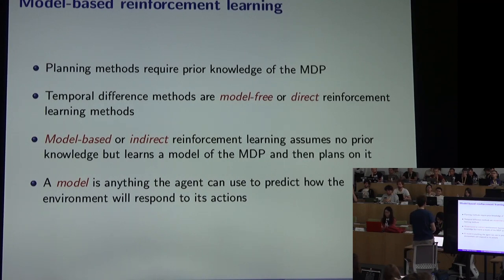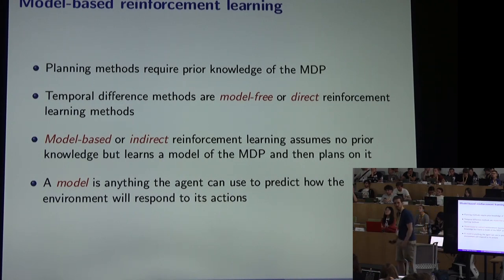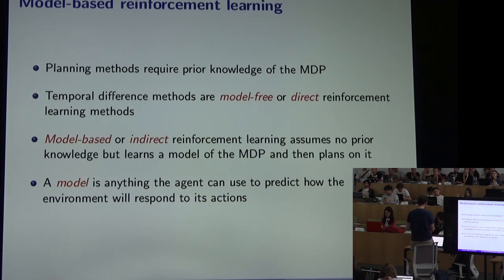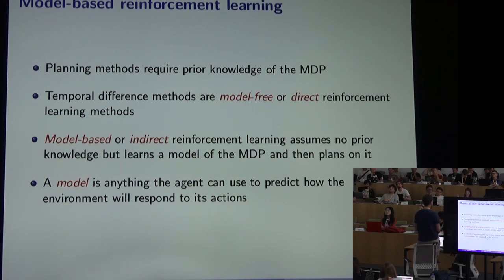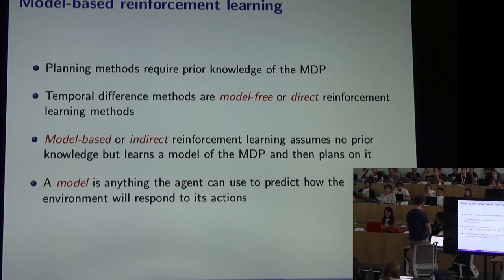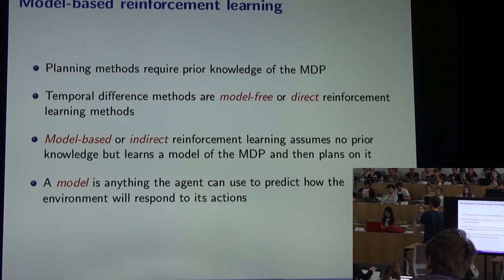That concludes the policy gradient portion of this lecture. Switching gears to model-based reinforcement learning — a concept I've hinted at several times. The idea is simple: take the data from interacting with the world and instead of directly estimating a policy or a value function, add a level of indirection by using the data to estimate a model, then feed that model to a planning method — value iteration, policy iteration, sample-based planning — to estimate a value function from which we derive a policy.